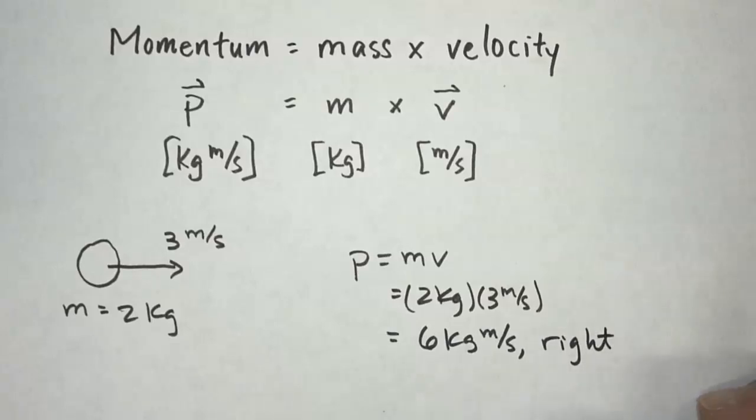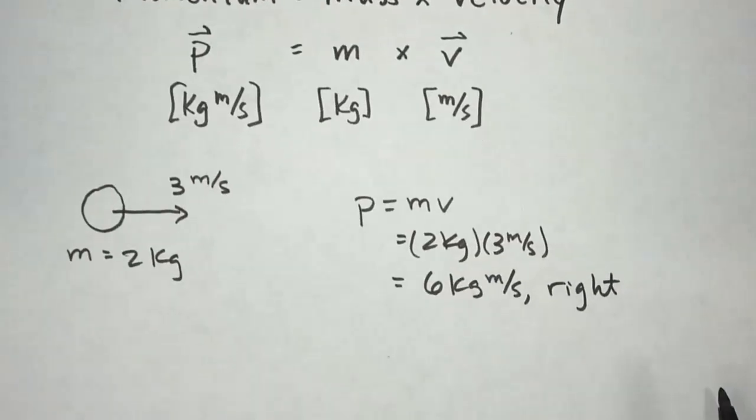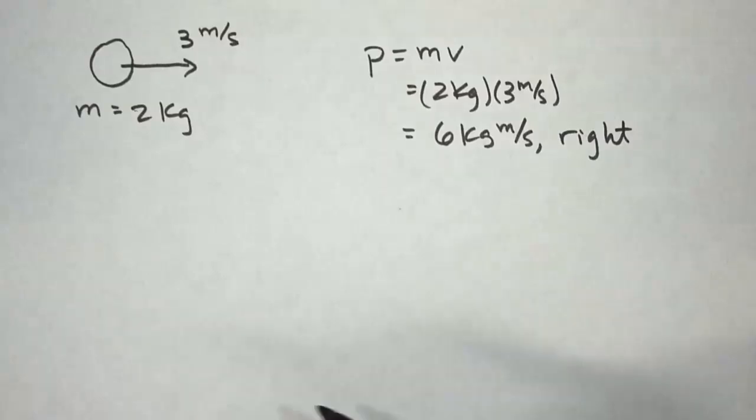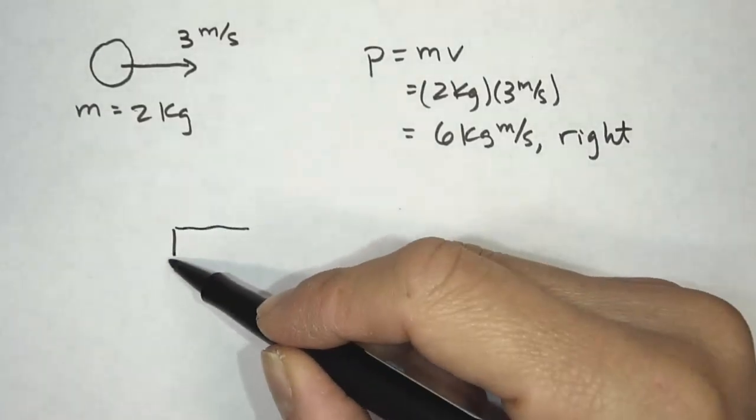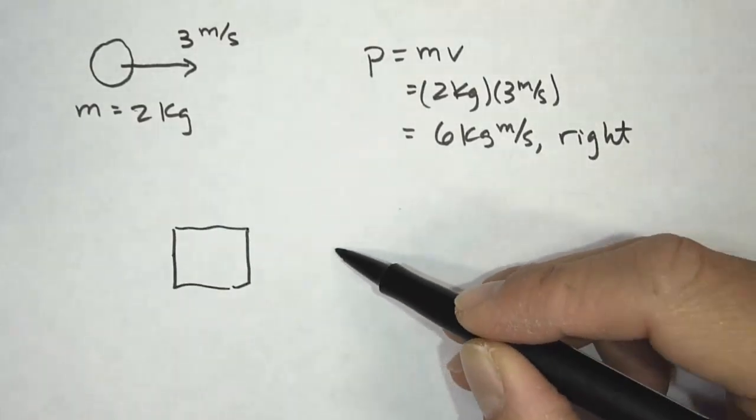So momentum, like I said earlier, we can think of it as how hard it is to stop an object. So an object that has a higher momentum, it means it would be harder to stop that object. Now let's take a look at some different objects with momentum, and we're going to compare their momentum.